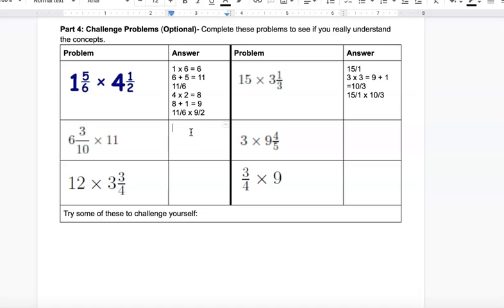One more of these and then I'll let you try them on your own. So we got 6 and 3/10, okay, so it's 6 times 10 equals 60, and you add 3, so it's 63 over 10 times 11 over 1.